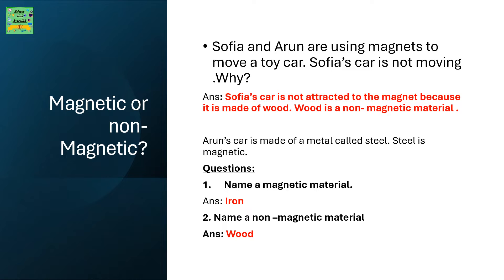Question: Name a magnetic material. Iron. Name a non-magnetic material. Wood.